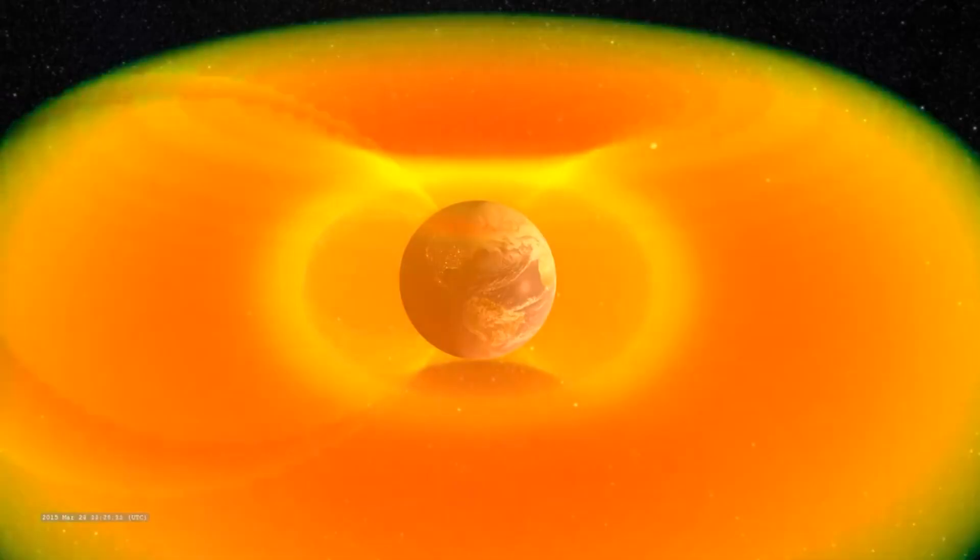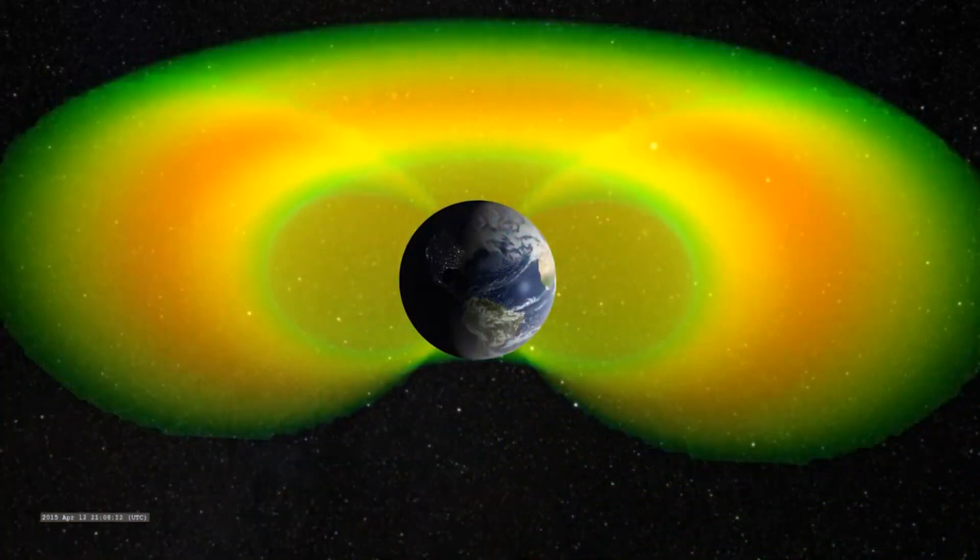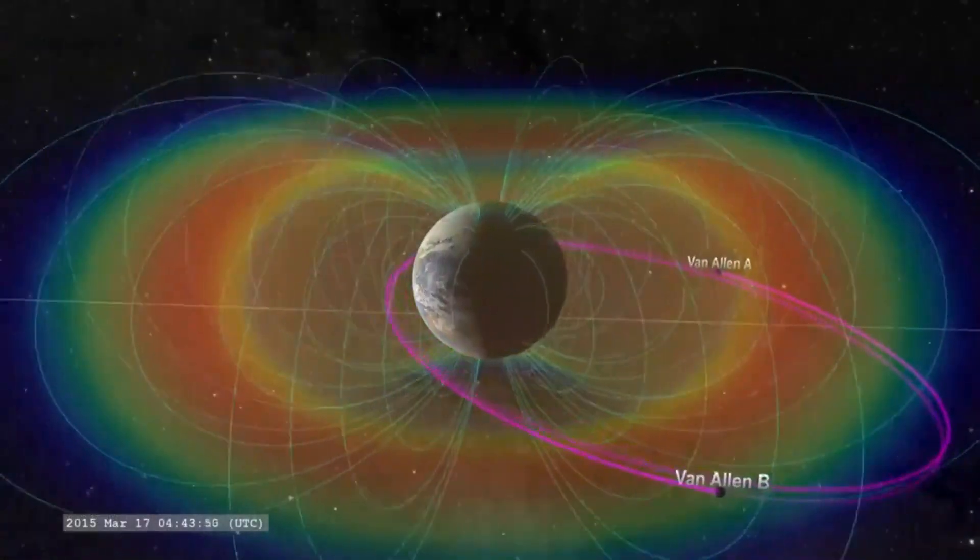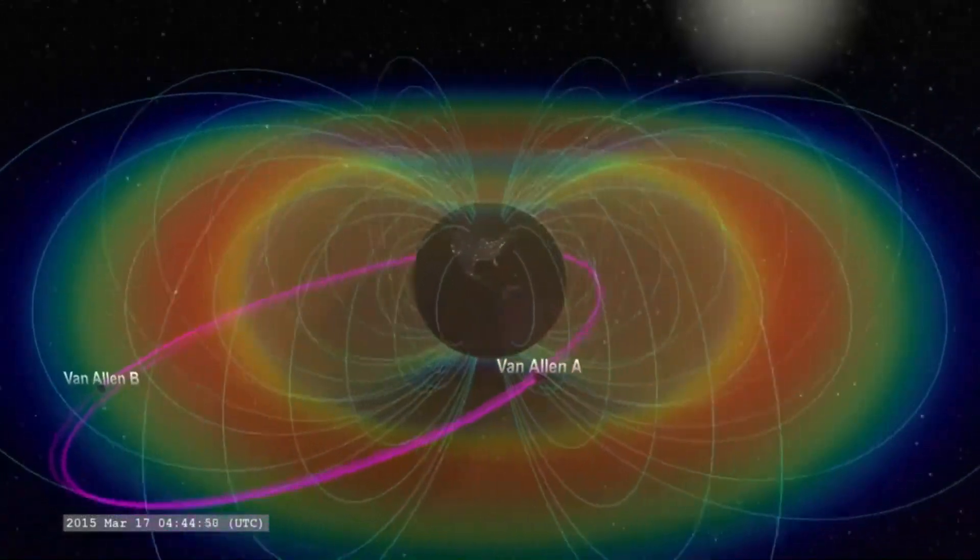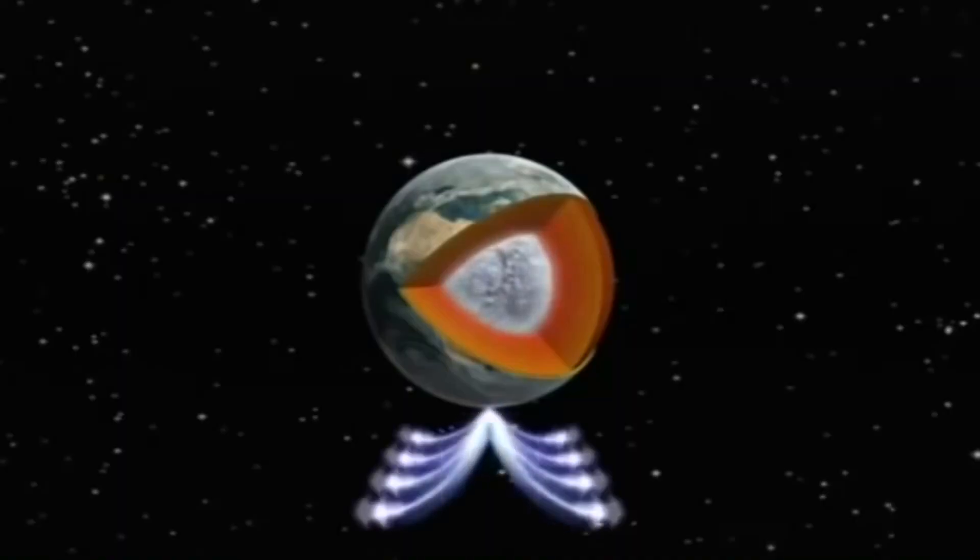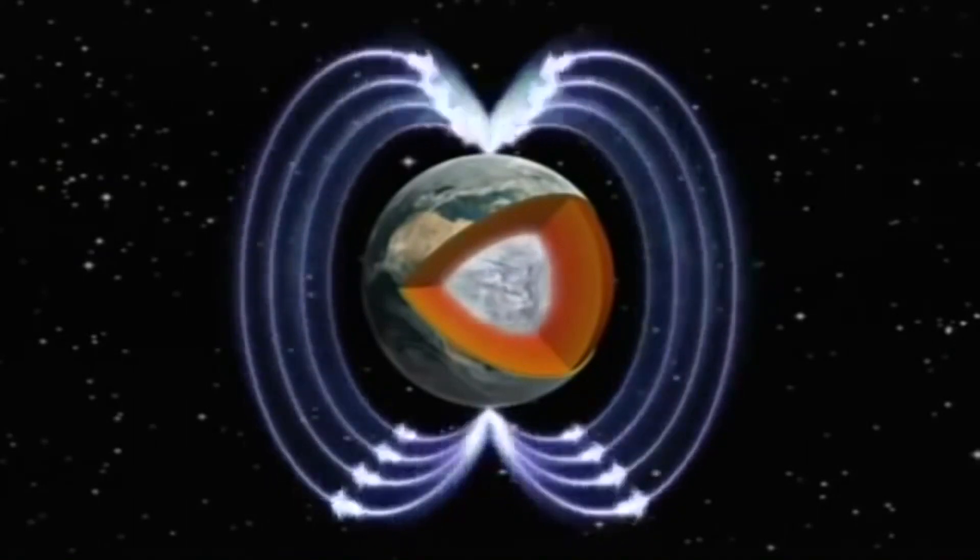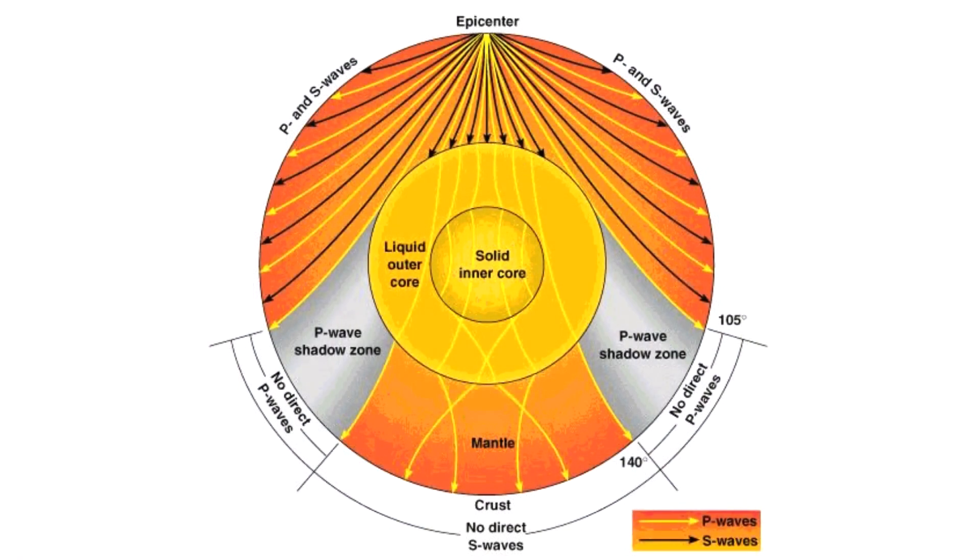It is important to note that the Van Allen belts exist due to solar protons and electrons becoming trapped within the Earth's magnetic field. This field is generated by the rotation of the Earth's liquid iron outer core. And while you can't drill all the way down to this outer core, you can detect it with global seismology.